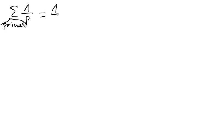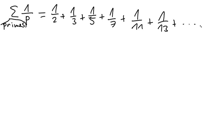So we sum 1 over 2 plus 1 over 3 plus 1 over 5 plus 1 over 7 plus 1 over 11 plus 1 over 13 and so on. And so we are summing much smaller number, much smaller amount of numbers than in a general case of harmonic series.